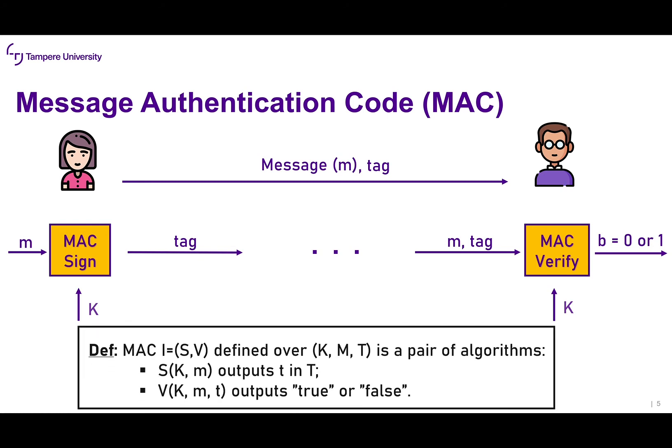A semi-formal definition: a MAC is defined over (K, M, T) — the key space, message space, and tag space — and is a pair of algorithms S and V. S (Sign) takes as input K and M and outputs tag T in the tag space. V (Verify) takes as input the same secret key K, message M, and the previously generated tag, and outputs 0 or 1, true or false.